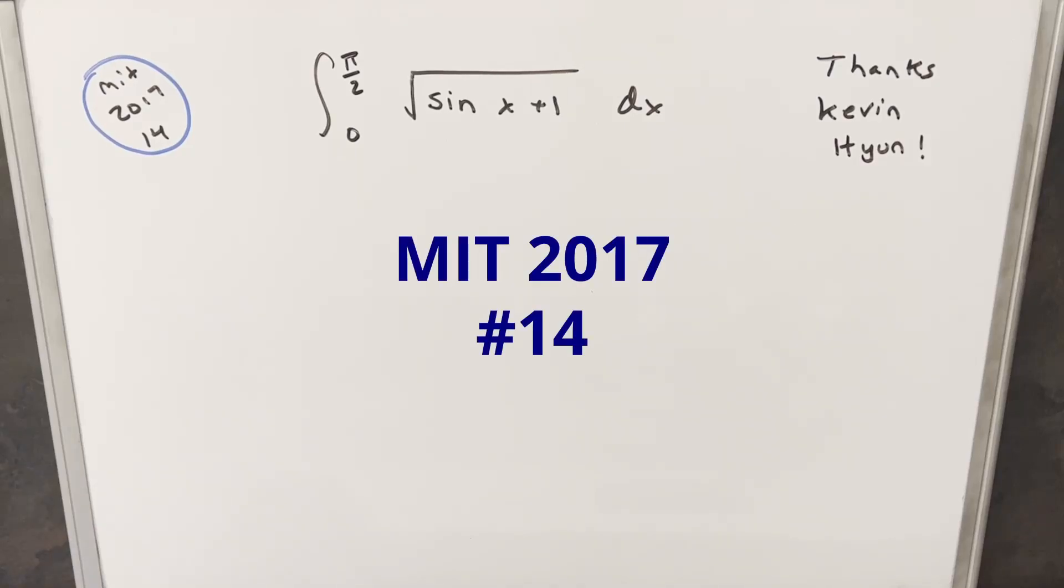Okay, we have here today another interesting integral from the MIT Integration B 2017. This one was problem 14. We have the integral from 0 to pi over 2, square root of sine x plus 1 dx.